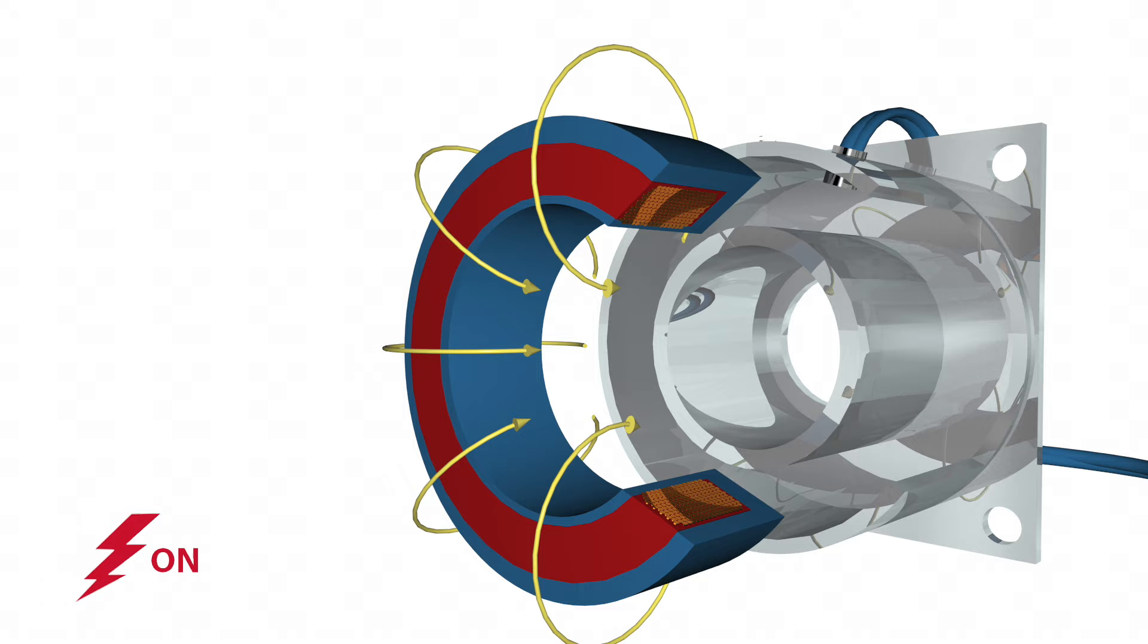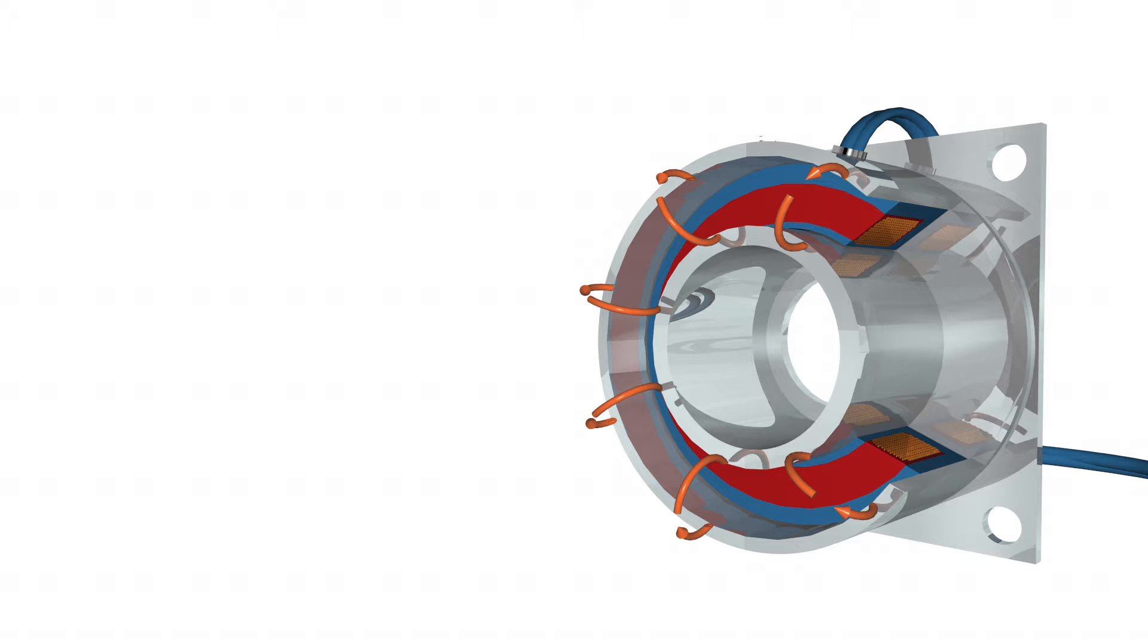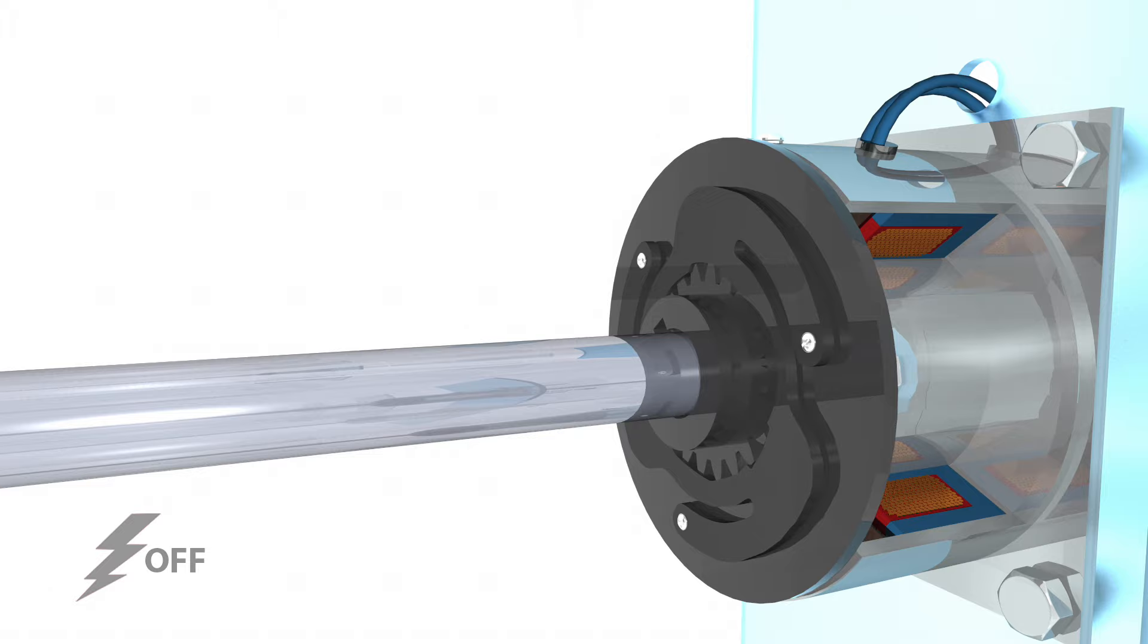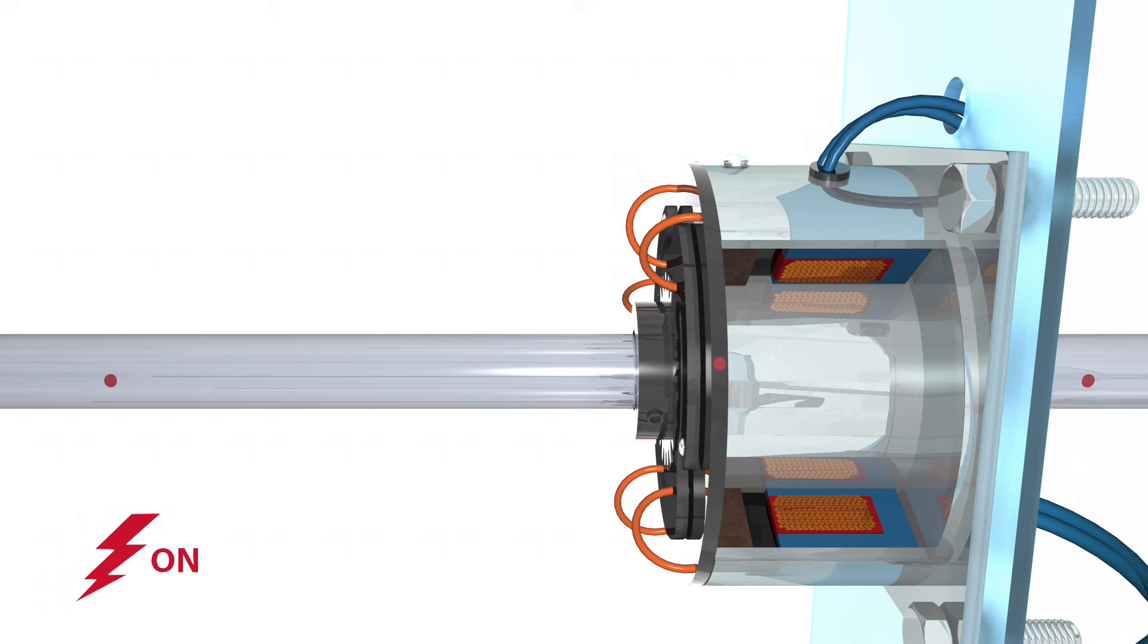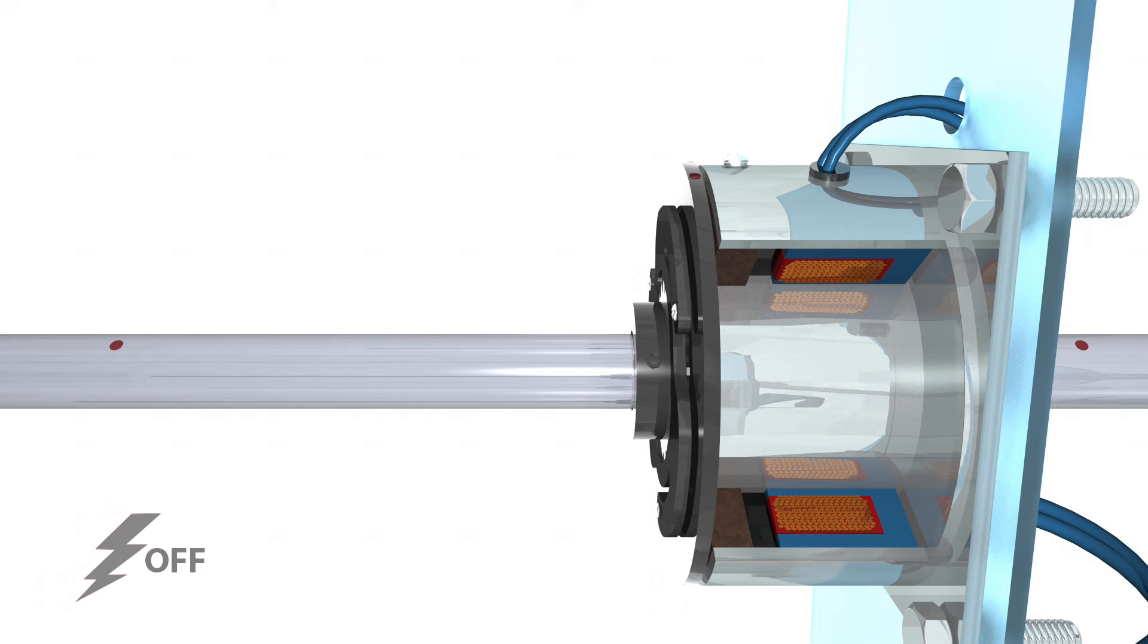Electromagnetic brakes operate via electric actuation but produce torque mechanically. When voltage or current is applied to the brake, the coil becomes an electromagnet and produces magnetic lines of flux. This flux travels through the small air gap between the field coil and the armature, magnetically pulling the armature against the hub and creating a holding force.